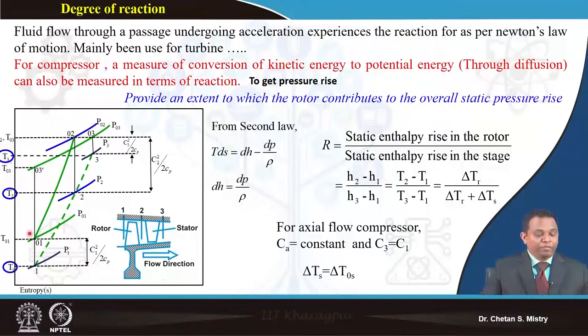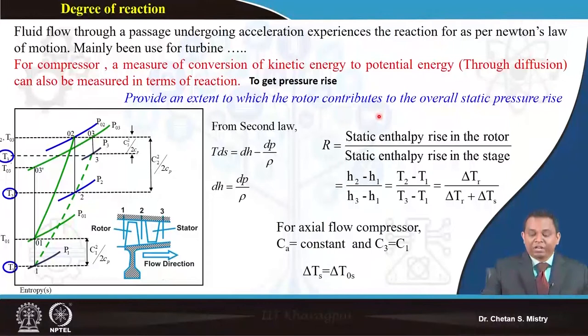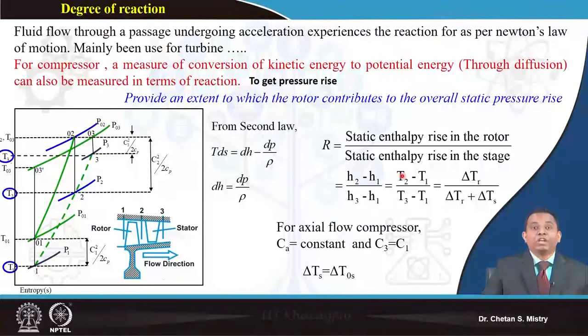Recalling the T-s diagram: station 1 represents the entry condition, station 2 represents the exit condition of the rotor, and station 3 is the exit condition from the stator. For the stage, entry is at station 1 and exit is at station 3. The degree of reaction can be written as the static enthalpy rise in the rotor divided by the static enthalpy rise in the stage: (h2 - h1) / (h3 - h1), or equivalently (T2 - T1) / (T3 - T1), which equals ΔT₀ in rotor divided by ΔT₀ in stage.